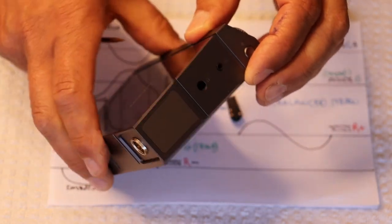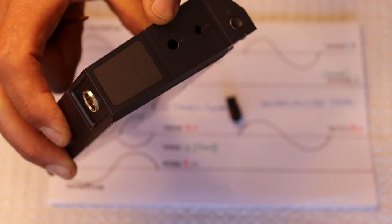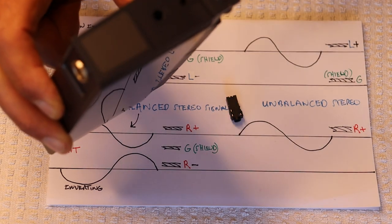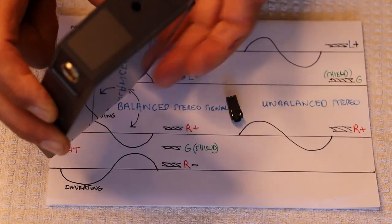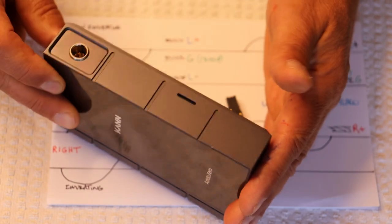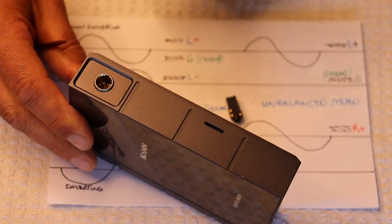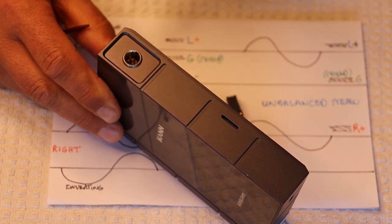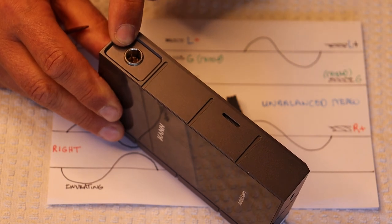So that's where the 1/8th used to go before Charles de-soldered it. That's the 2.5, which balanced, which I'm not interested in using. I find 1/8th is too small. Love quarter-inch jacks. But, you know, it's a small unit. So getting a quarter-inch jack, in fairness, wouldn't be easy.